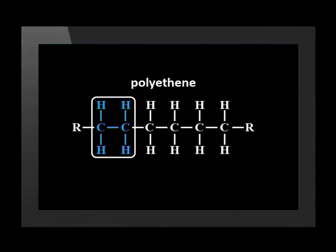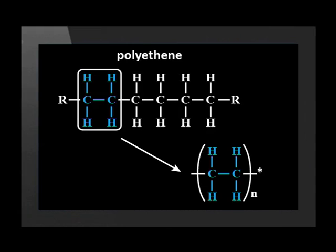How does one write the formula of a polymer? We cannot draw all of the carbon atoms. It's actually not too difficult if we know the monomer. We need to find it in the polymer chain. When we write the polymer formula, we identify the part that came from the monomer. In this case, the monomer was ethene. We write it in between two brackets with the letter N on the outside.